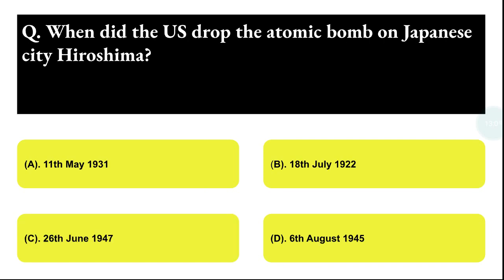Next question: when did the US drop the atomic bomb on the Japanese city of Hiroshima? Option A: 11 May 1931, Option B: 18 July 1922, Option C: 26 June 1947, Option D: 6 August 1945. The correct answer is 6 August 1945.